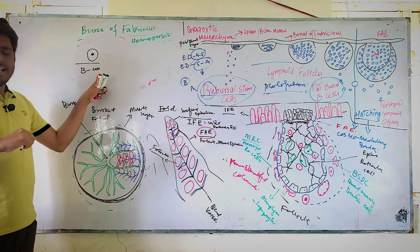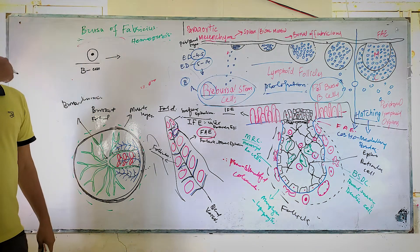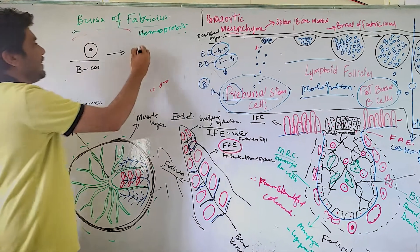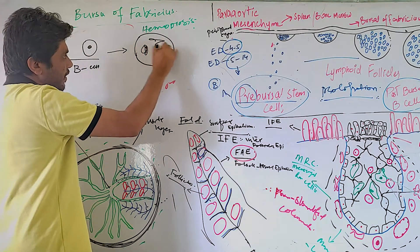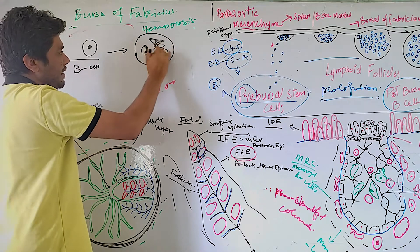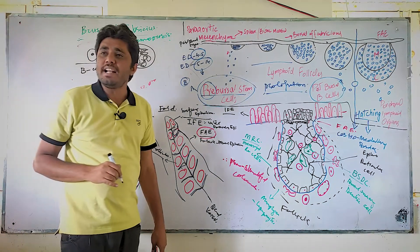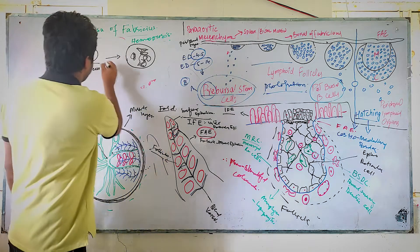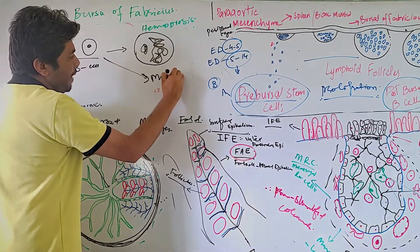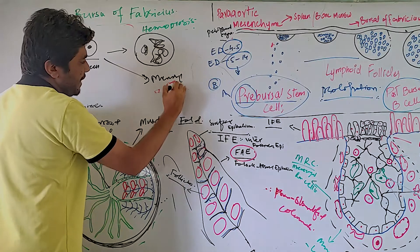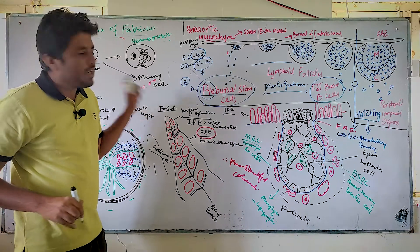These B cells, when they are mature, produce plasma cells or convert into memory cells.